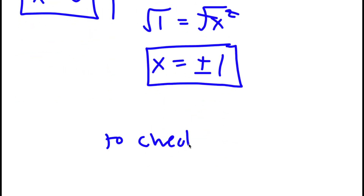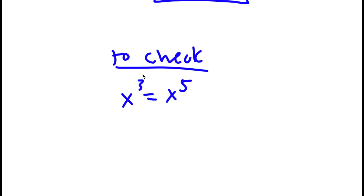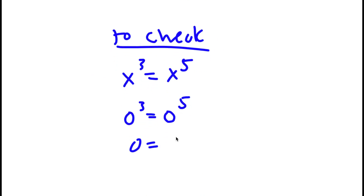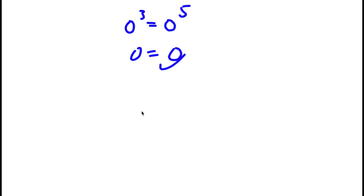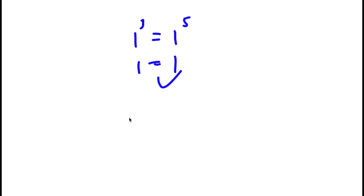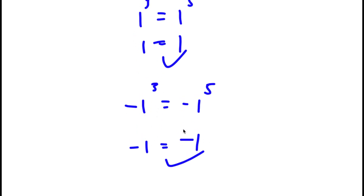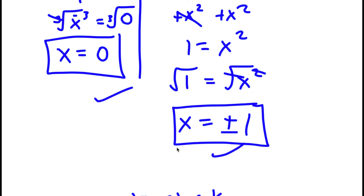To check, I verify x³ = x⁵ for each solution. If x = 0: 0³ = 0 and 0⁵ = 0, so this is correct. If x = 1: 1³ = 1 and 1⁵ = 1, so this is correct. If x = -1: (-1)³ = -1 and (-1)⁵ = -1, so this is correct as well. All three solutions x = 0, x = 1, and x = -1 are verified.